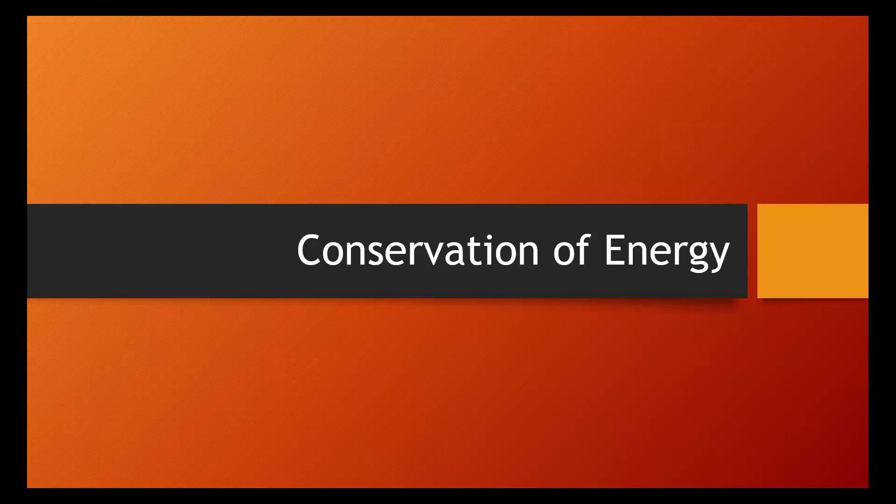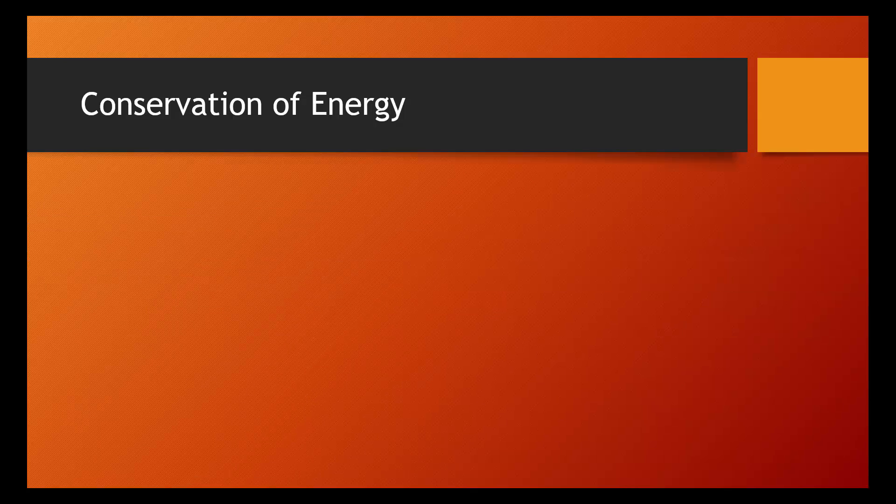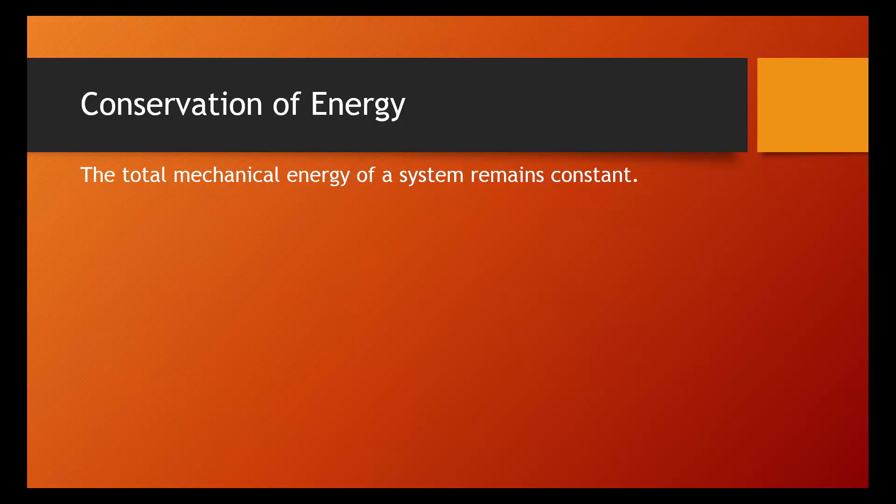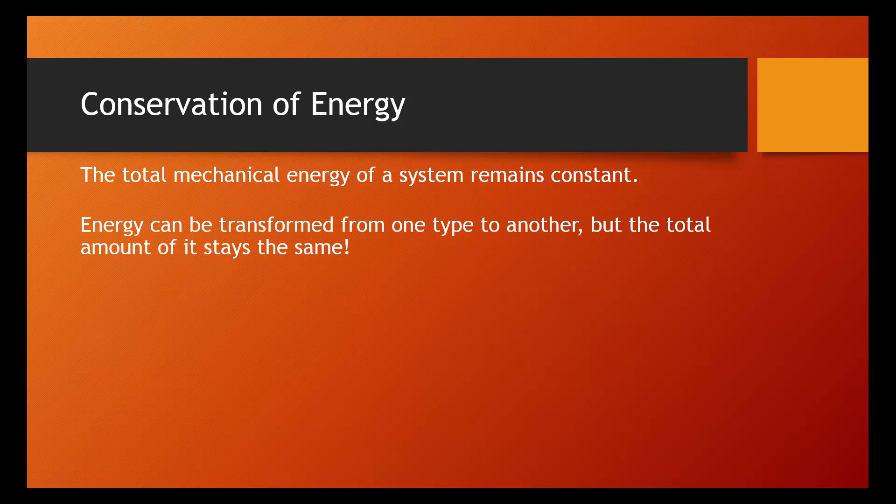This lesson is about conservation of energy. Conservation of energy is the idea that the total mechanical energy of a system remains constant. Energy doesn't appear out of nowhere, and energy doesn't disappear into nowhere. One form of energy can transform into another type, but the total amount of it always stays the same.